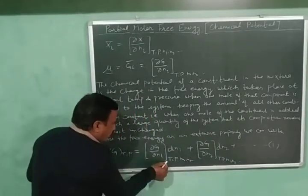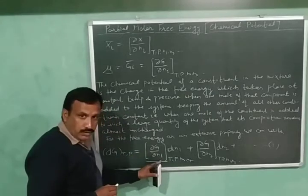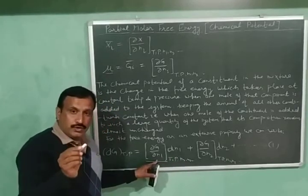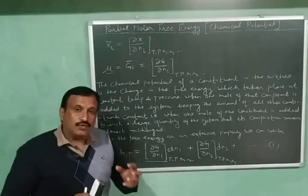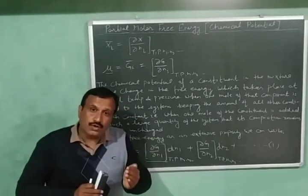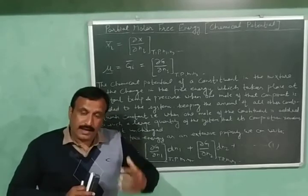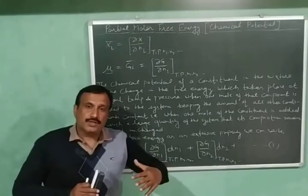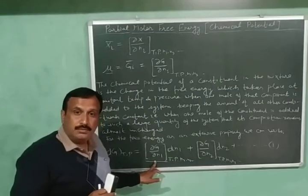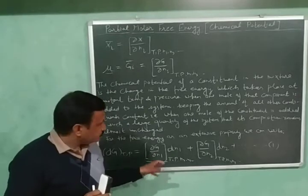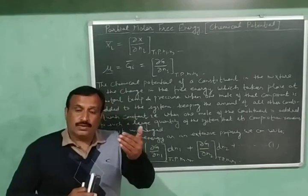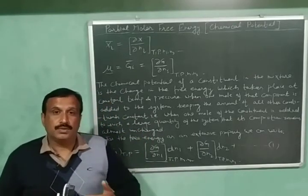The quantity (∂G/∂N₁) at constant temperature, pressure, and composition is called the partial molar free energy or chemical potential of the first component. It gives the change in free energy when one mole of the first component is added such that temperature, pressure, and composition remain almost constant. This is μ₁. Likewise, (∂G/∂N₂) is the chemical potential of the second component, μ₂.